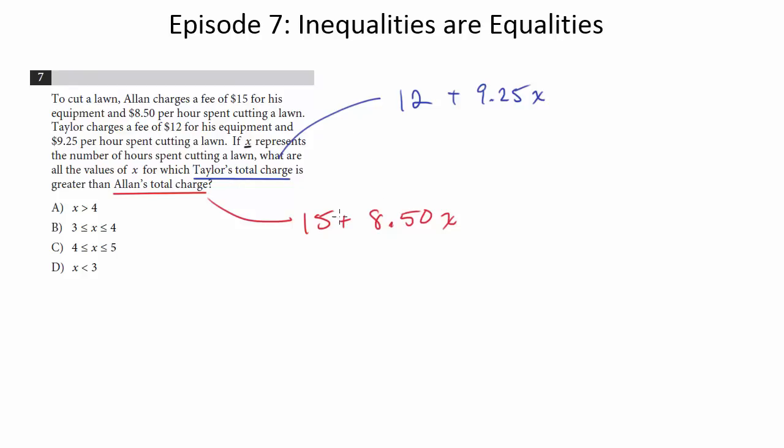So there you go. You can see it in the way I said it. So we're going to take Taylor's 12 plus $9.25X and we want to know when his are greater than Allen's. So we're going to write Allen's, which is 15 plus $8.50X.